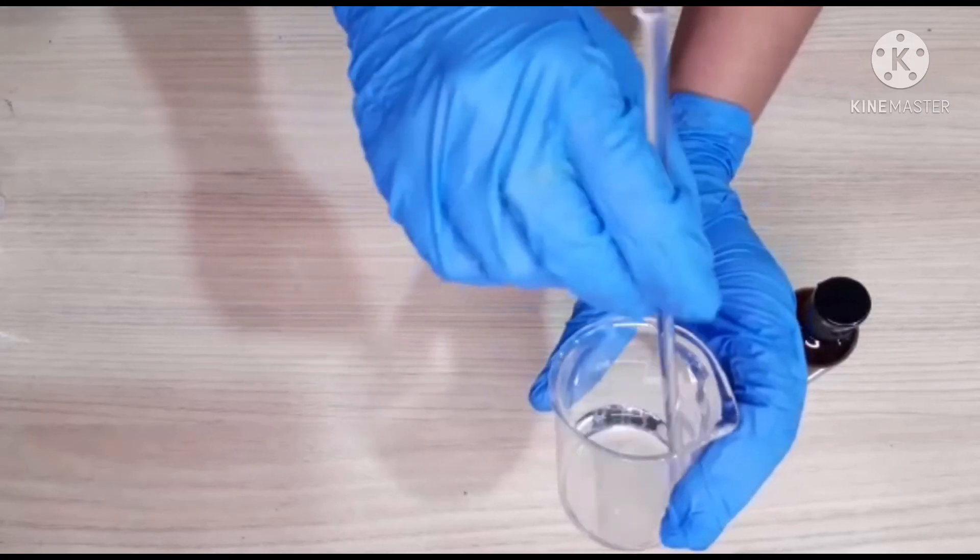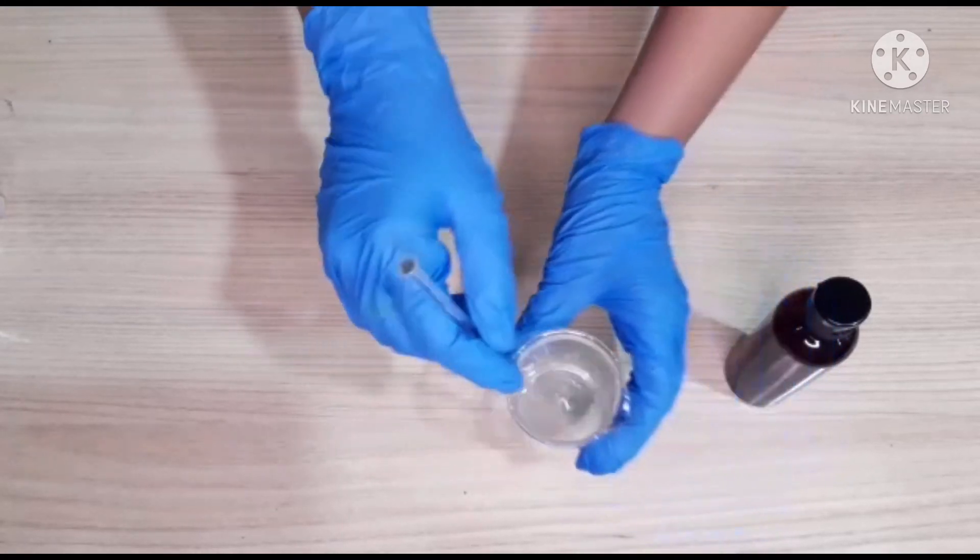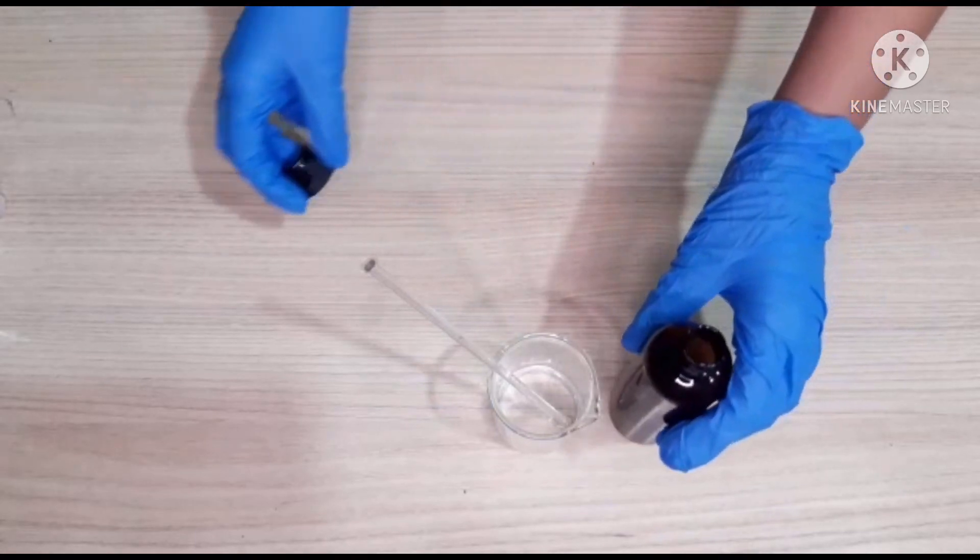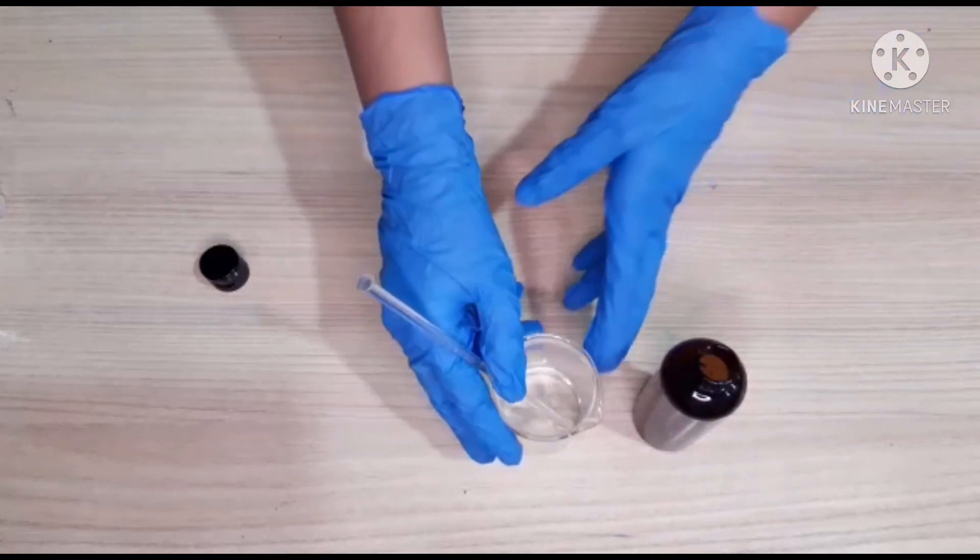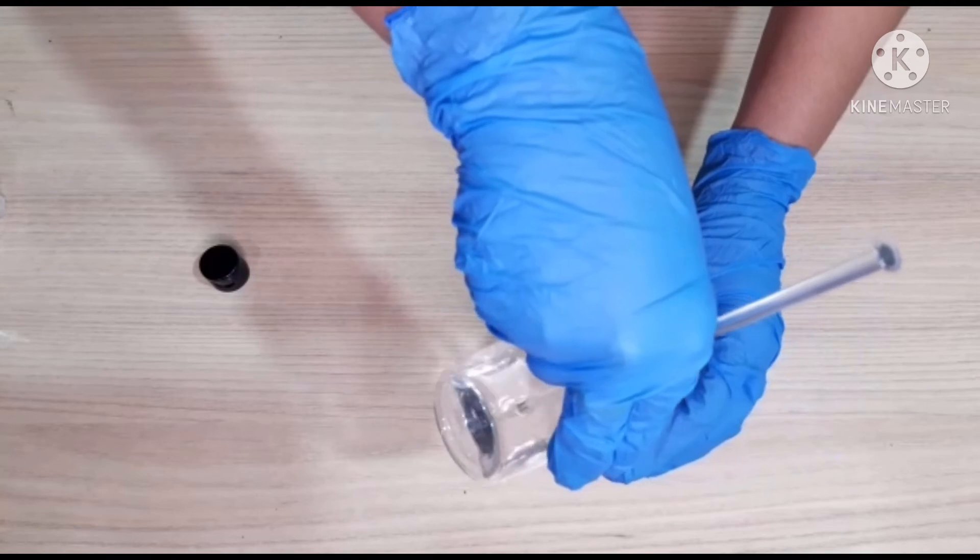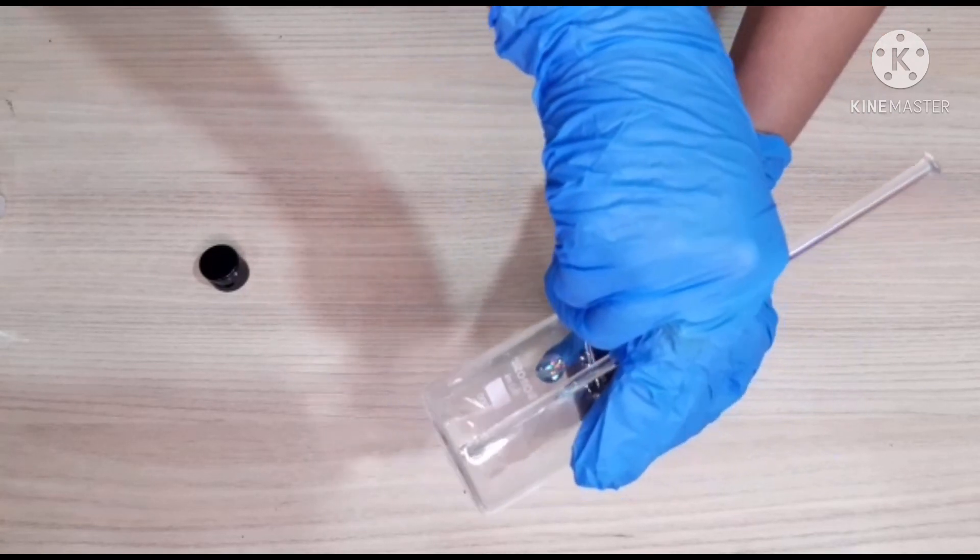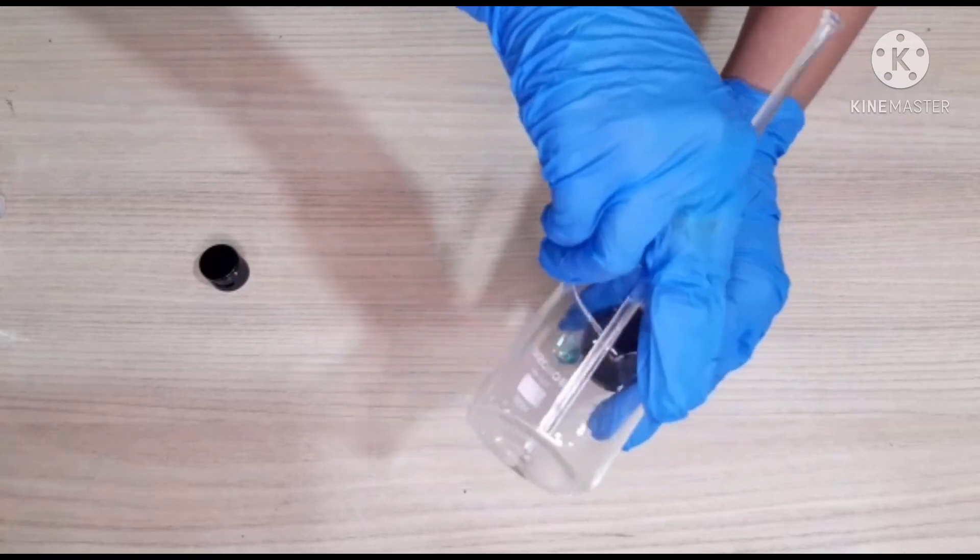You can see that it is clear completely and we will pour it in a dark color bottle. This can be stored in any cool and dark place for 6 months or a year. After that, it might change the pH and may not be useful.